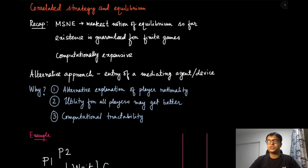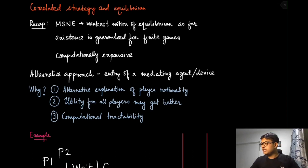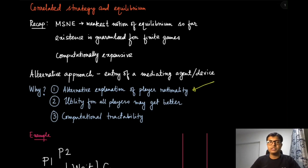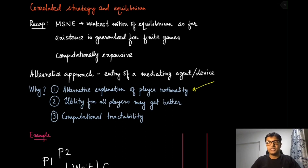This actually helps us in giving an alternative explanation of player rationality. There are certain situations like this one where it is not meaningful to ask players to take decisions independently; rather they can collectively decide, even via a mediating or randomization device like a coin. This is the motivation through which we are going to define the correlated strategy and its equilibrium. The first reason is this alternative explanation of rationality. We will also see that the utility of these players can get better when they coordinate and delegate to a randomization device.